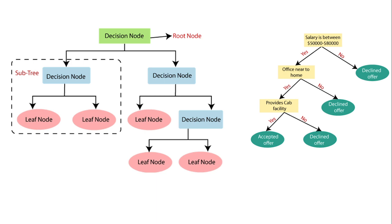When we have to take some decision, like suppose a candidate gets three to four offers, he has to decide which offer to accept and which to decline or reject. Suppose he keeps a criteria that he will only join with an offer of $50,000 to $80,000 per annum. If yes, there is a chance he may accept; if no, he will decline the offer.